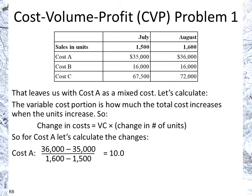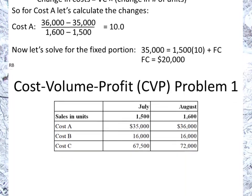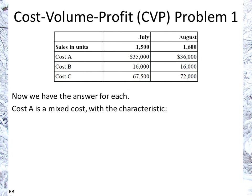So for each extra unit manufactured and sold, we have an increase in cost of $10 per unit. Then we solve for the fixed portion: the total has to equal the variable portion plus the fixed cost. So $35,000 has to equal 1,500 times the variable cost per unit ($10) plus a fixed portion. The fixed portion has to be $20,000. August will give you the same answer. We had a positive value for both the fixed cost and the variable cost per unit, because otherwise it would not have made very much economic sense.